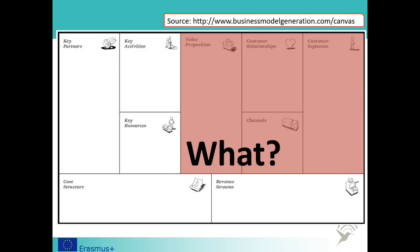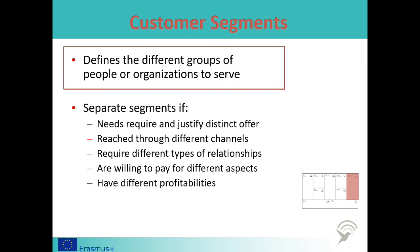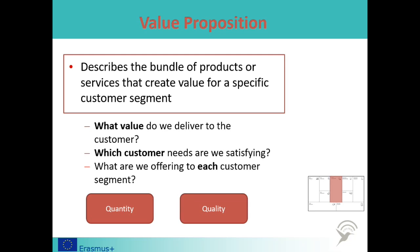Let us start with the 'what.' The first step is to identify your customer. The next step is to identify what your value proposition is for each of those customer segments — that is, to describe the bundle of products or services that create value for a specific customer segment. You must ask yourself two questions: what value are you delivering to the customer, and which customer needs are you satisfying?